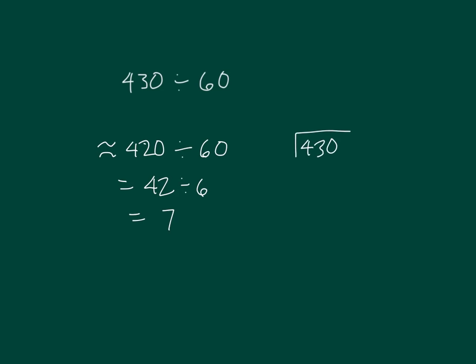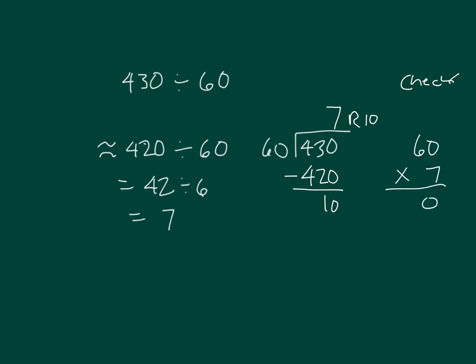430 divided by 60. 60 goes into 430 seven whole times. Notice where I'm placing the 7 over the ones place. 7 times 60 is 420, and 430 minus 420 is 10. So our remainder is 10. Run a check: we'll take 60, multiply it by 7, and add back in 10. 420 plus 10 is 430. So it checks.